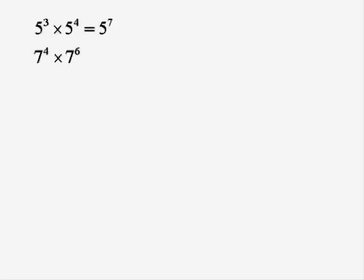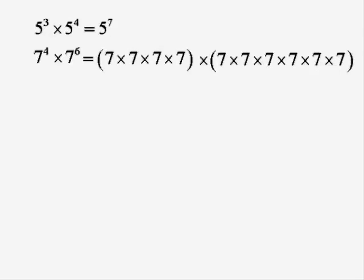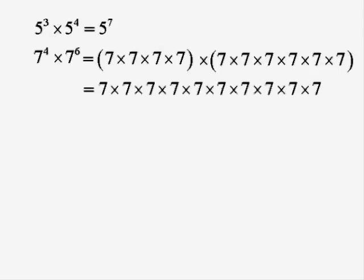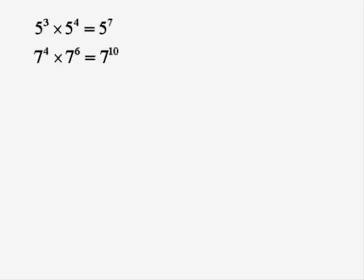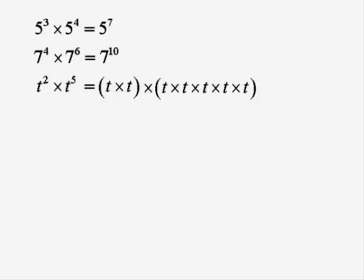7 to the 4 times 7 to the 6 — that's 4 sevens times 6 sevens all multiplied together, so we could write that as 7 to the power of 10. Now let's look at a letter — it's the same principle. t squared times t to the 5: t squared is t times t, and t to the 5 is t times t times t times t times t — 5 t's multiplied. That makes a total of 7 t's all multiplied, so we could rewrite it as t to the power of 7.